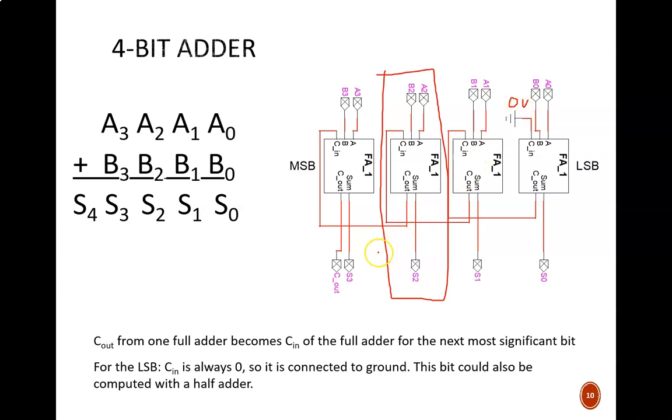In the last full adder, we have a carryout, but no subsequent column to bring it to. Since we are working in unsigned binary, this carryout becomes the most significant bit of the final sum. So we see that with 4-bit inputs, we create a 5-bit sum.